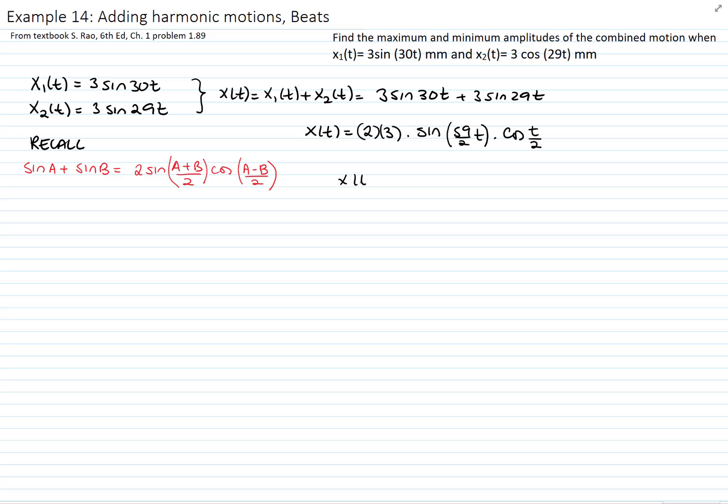The cosine represents the amplitude of the function and the sine of 59 over 2 times t represents actually the harmonic motion. So let's graph this equation to understand better what is happening.